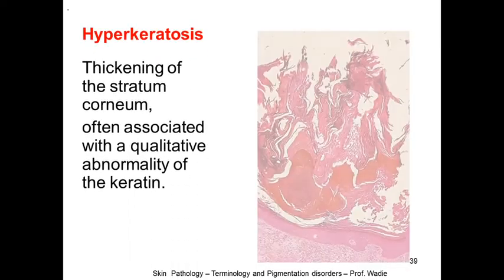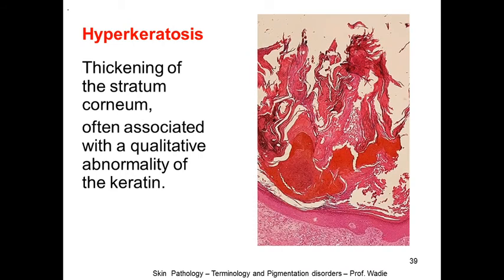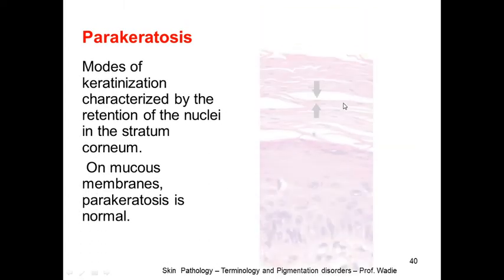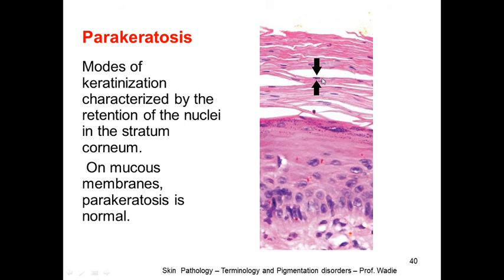Hyperkeratosis is thickening of the stratum corneum, often associated with a qualitative abnormality of the keratin. You can see abundant keratin in the stratum corneum — all this keratin is hyperkeratosis. Parakeratosis means the presence of nucleated cells in the upper layers of the skin — a mode of keratinization characterized by retention of nuclei in the stratum corneum. On mucous membranes parakeratosis is normal, but in the skin these cells should not be nucleated.